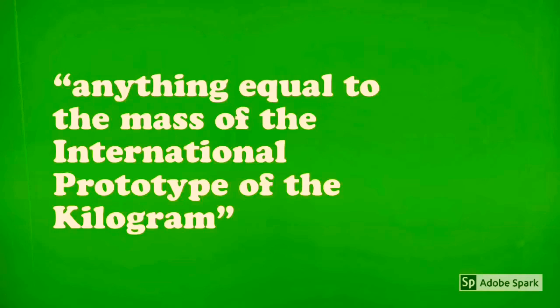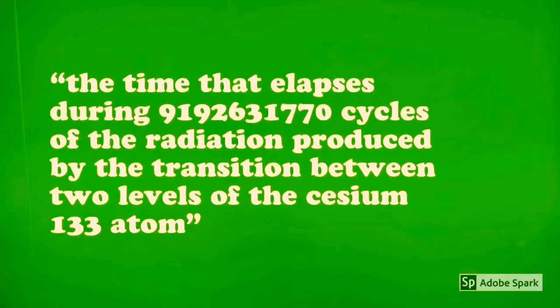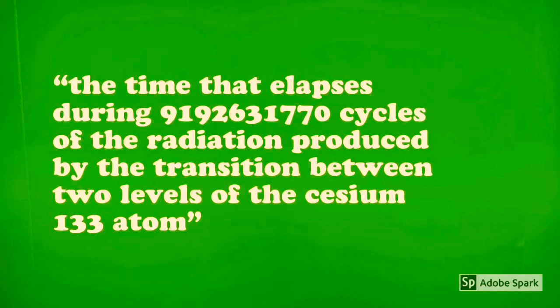The second, which is defined as the time that elapses during 9,192,631,770 cycles of the radiation produced by the transition between two levels of the cesium-133 atom.